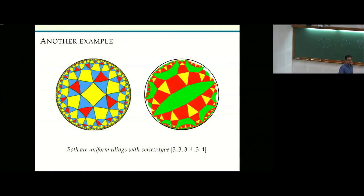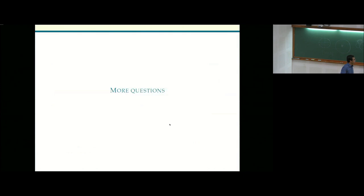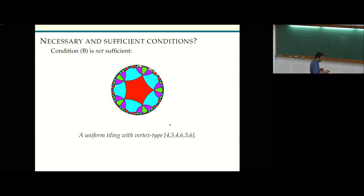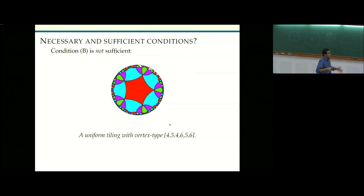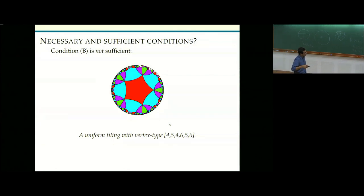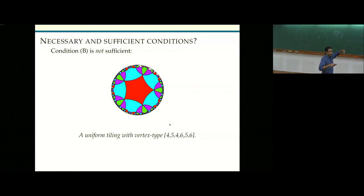There are many more questions raised by this. The existence criteria I described are sufficient conditions, but not necessary and sufficient. For example, the tuple 4, 5, 4, 6, 5, 6 — which does not satisfy condition B — actually does have a tiling with that vertex type, as shown in this picture. So the result is only one direction, not an if and only if, and the full characterization remains an open question.